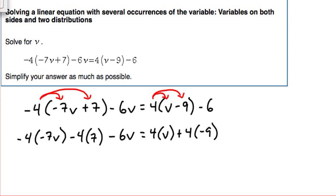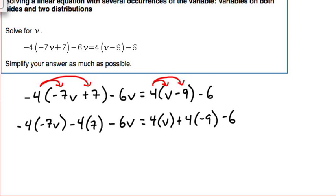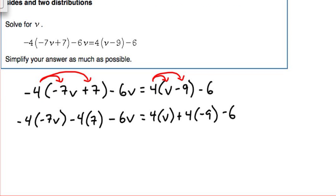Okay, so let's multiply here. Negative 4 times negative 7v is a positive 28v, and what I like to do is actually cross things out as we complete them. Next, negative 4 times positive 7 is negative 28.